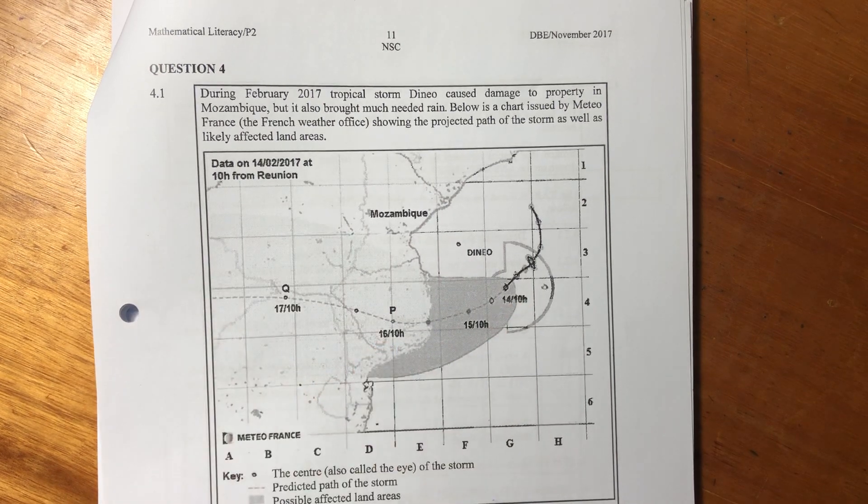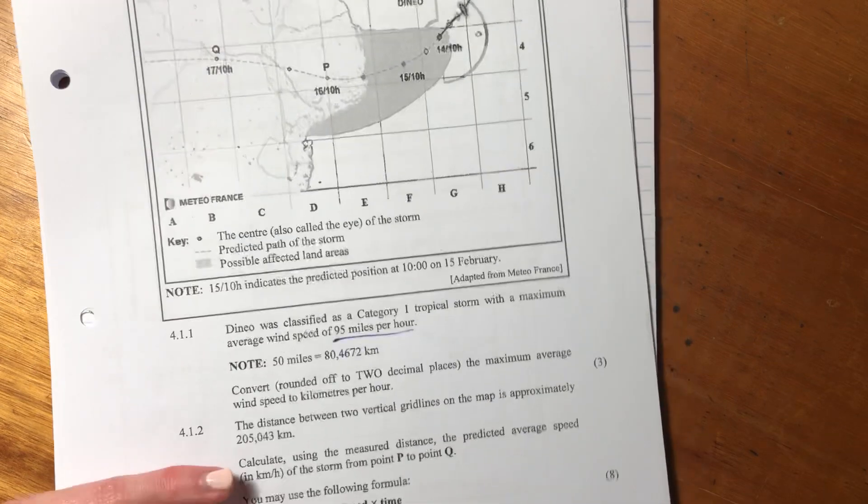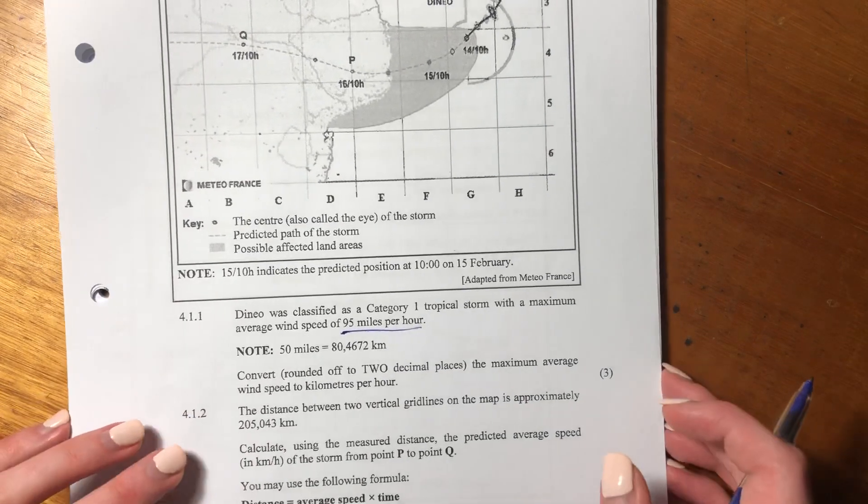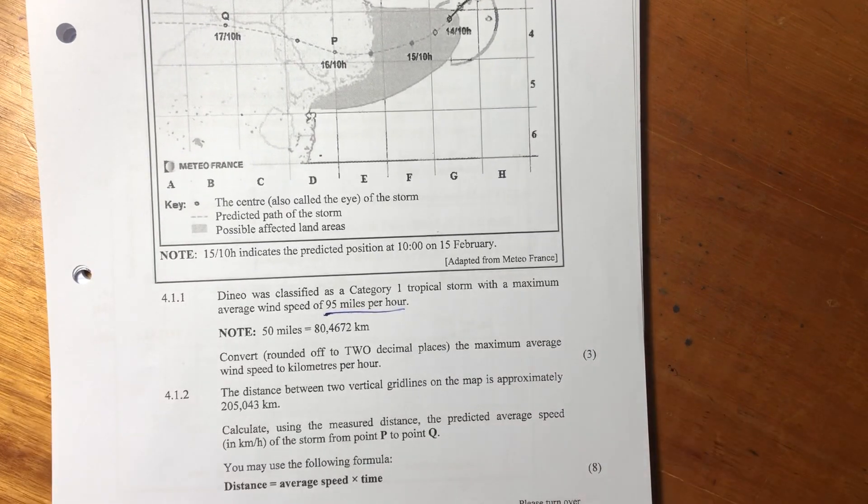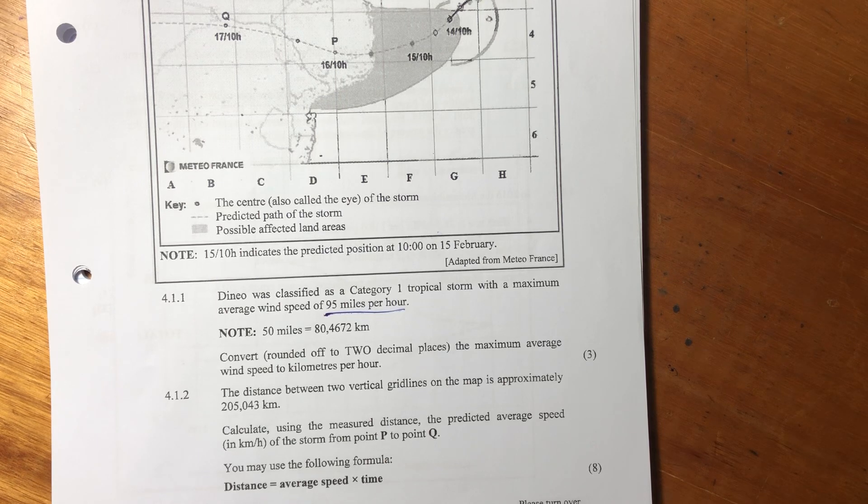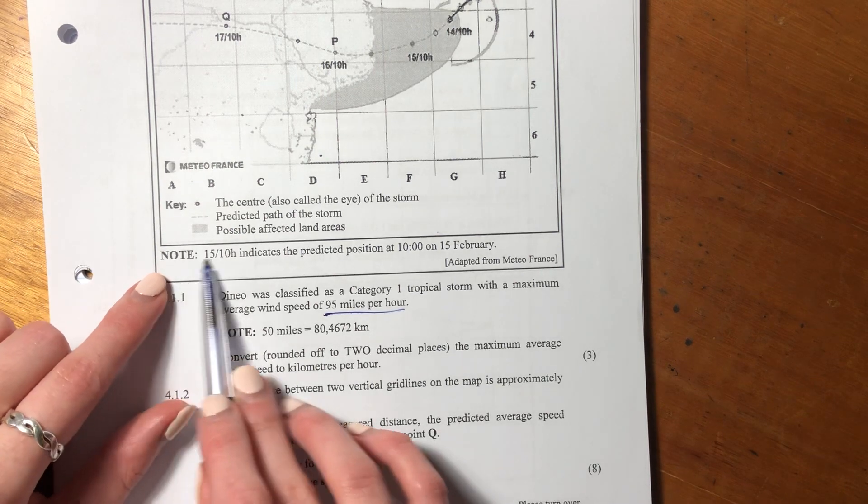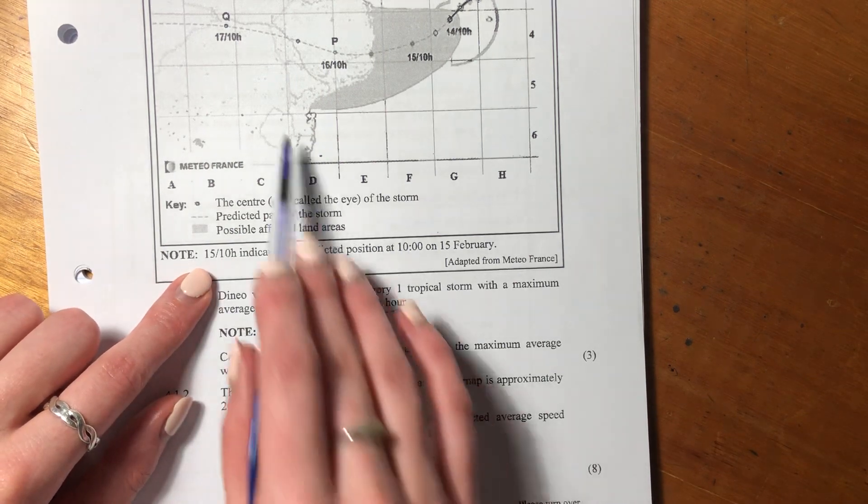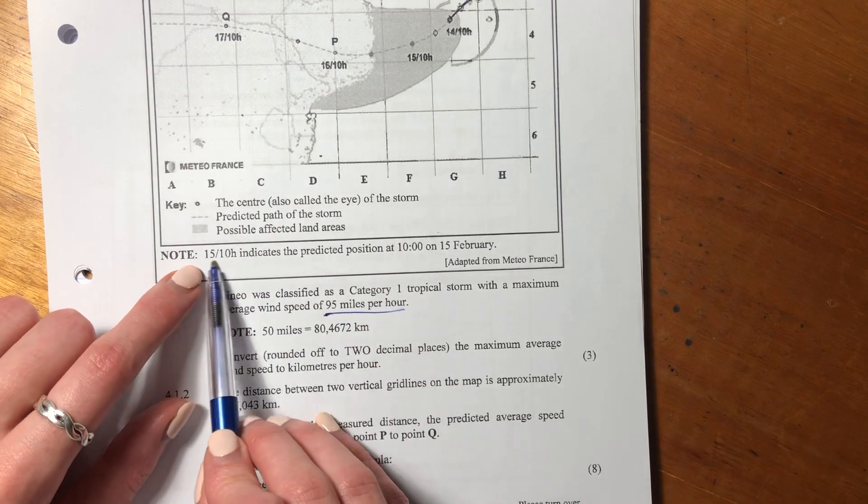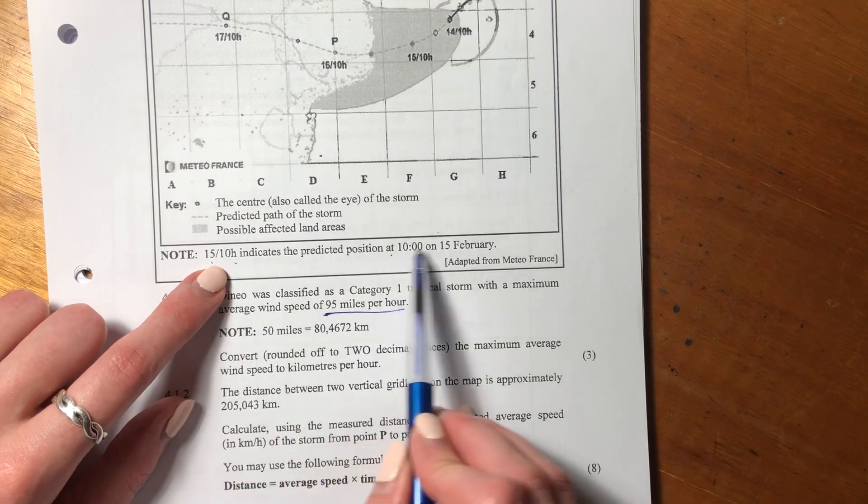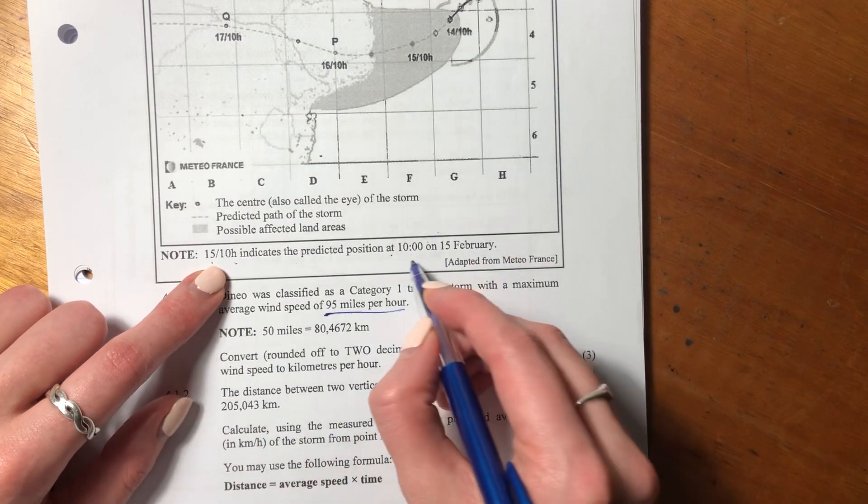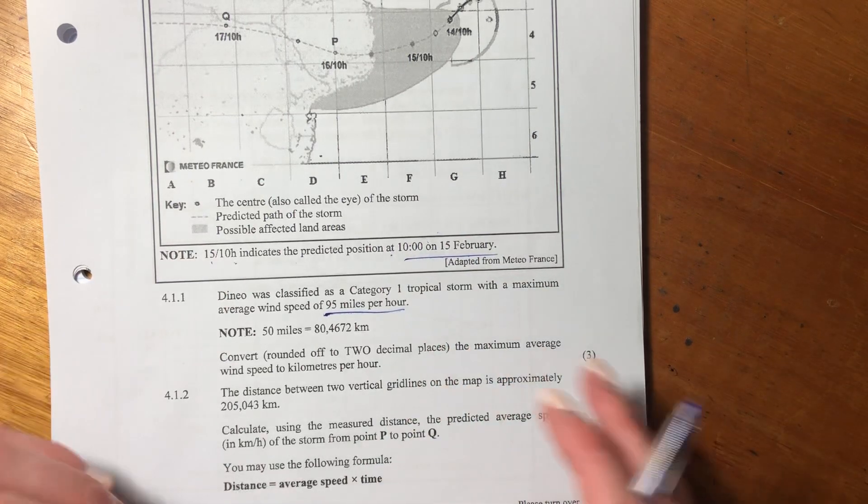Let's now see what the first question asks us. I know I say this a lot, but what I often say is the scenario sometimes can be really complicated, but the questions sometimes help us understand it. Just so that you understand where I got my explanation from, it says 1510 indicates the predicted position at 10 o'clock on the 15th of February. So they explain what that symbolism means.